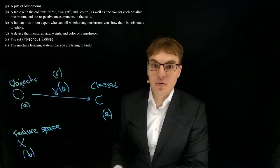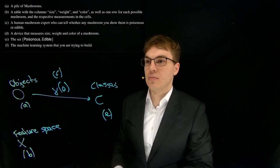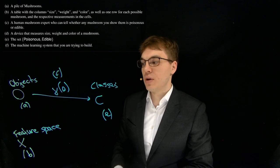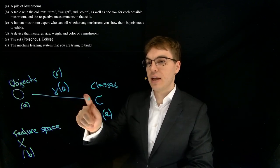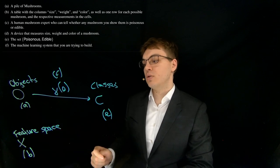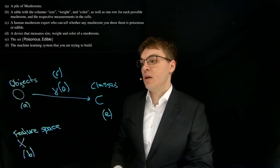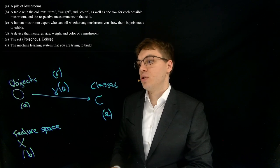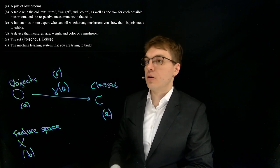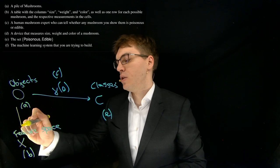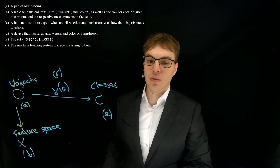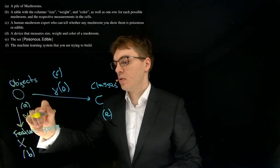But still, we don't have an automated system here. We're trying to do this now, but we're not doing this directly. Rather, we're taking this detour via the feature space and then get to the classes. So how do we input an object into the computer or into the feature space? Well, we need another map here. And we call this map alpha of an object.